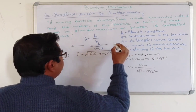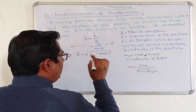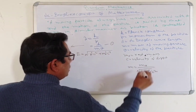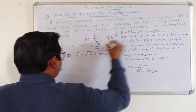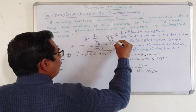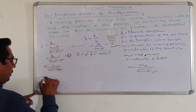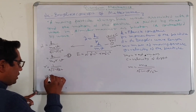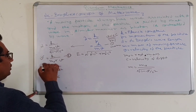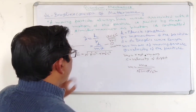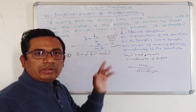Here equation 1 is lambda = h/(mv) and equation 2 is the relativistic form. Equation 1 is applicable when the velocity of the particle is much smaller than the velocity of light. In this case, gamma equals 1 and m equals m₀. When v is approximately equal to the velocity of light, we use the relativistic formula. Otherwise, when the velocity of the particle is much smaller than the velocity of light, we use equation 1.